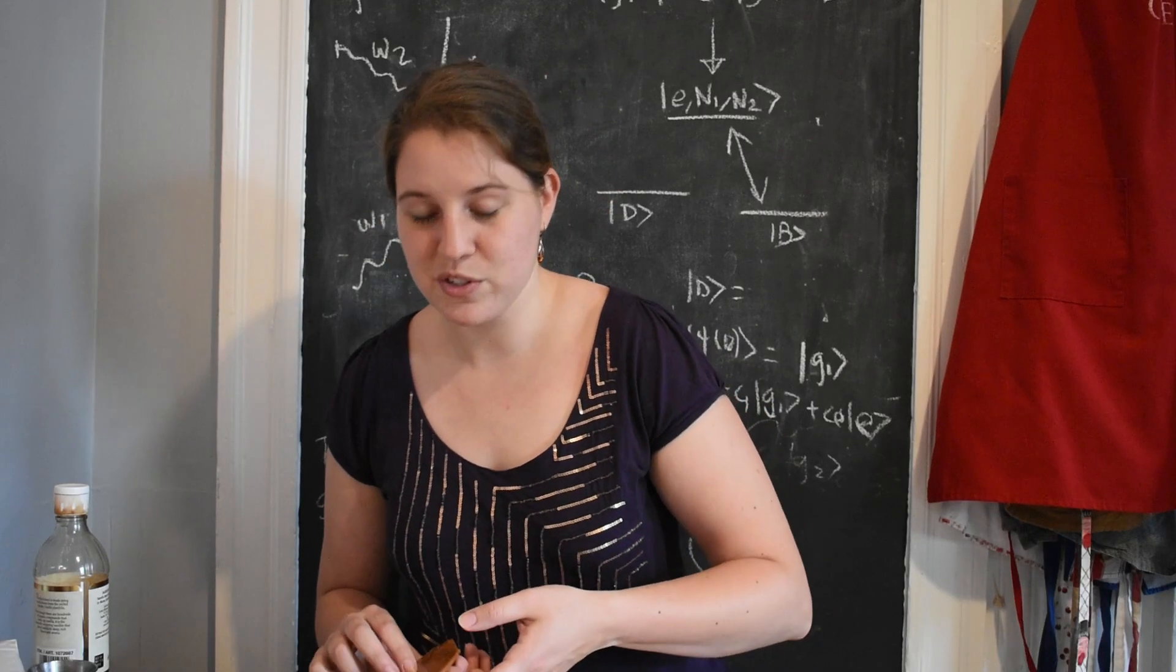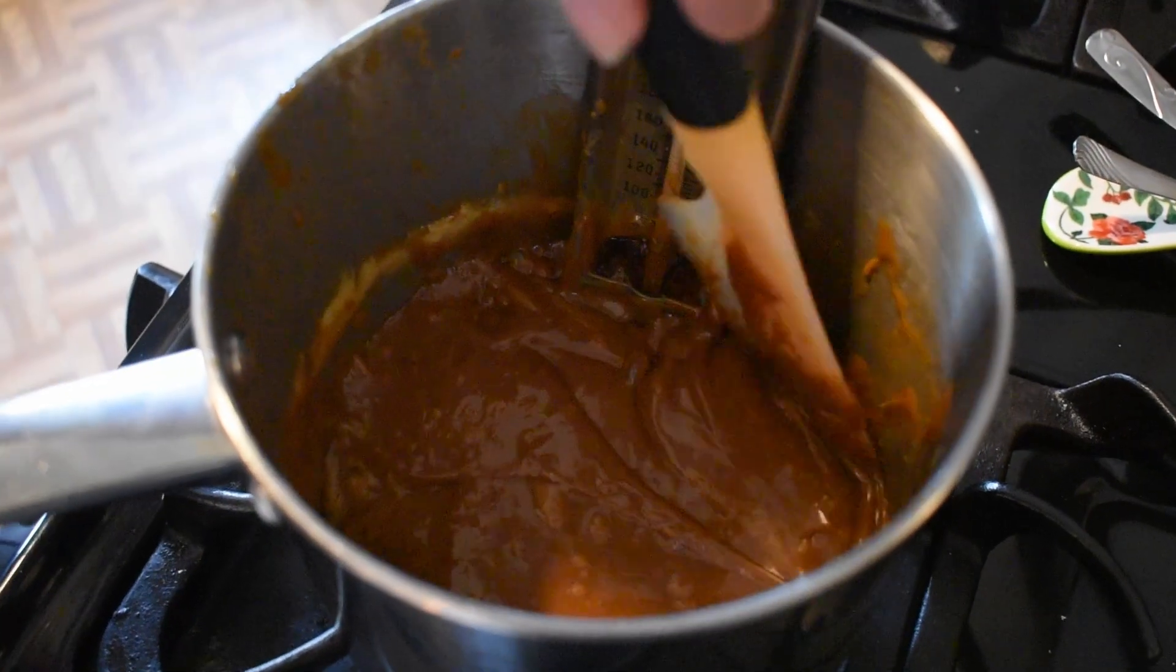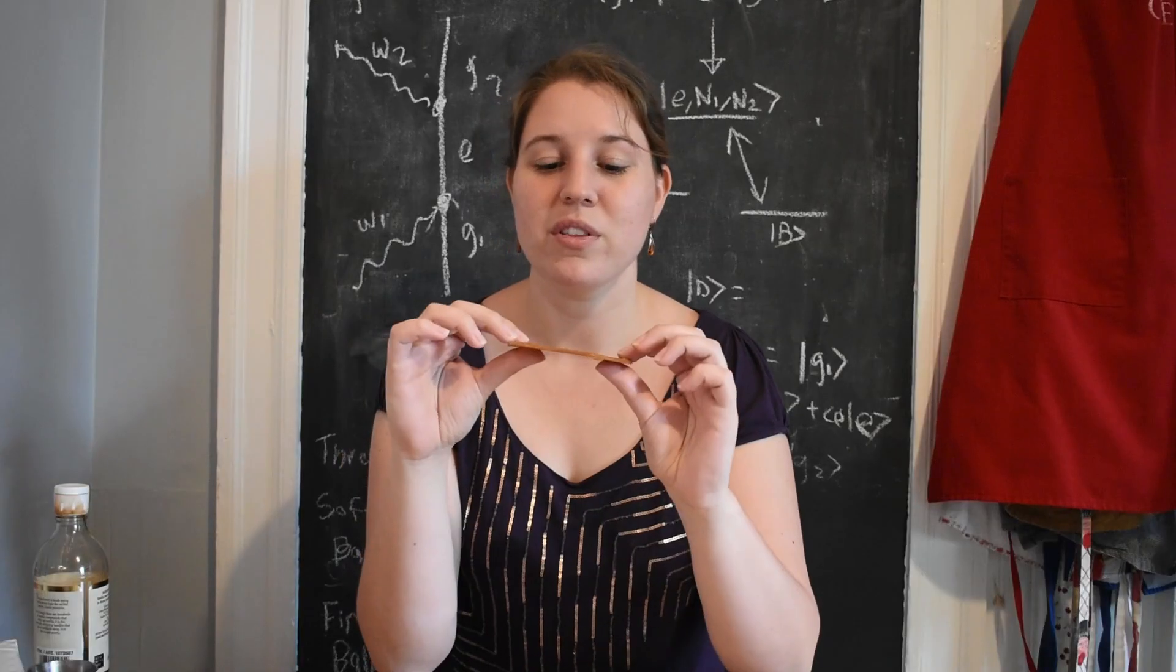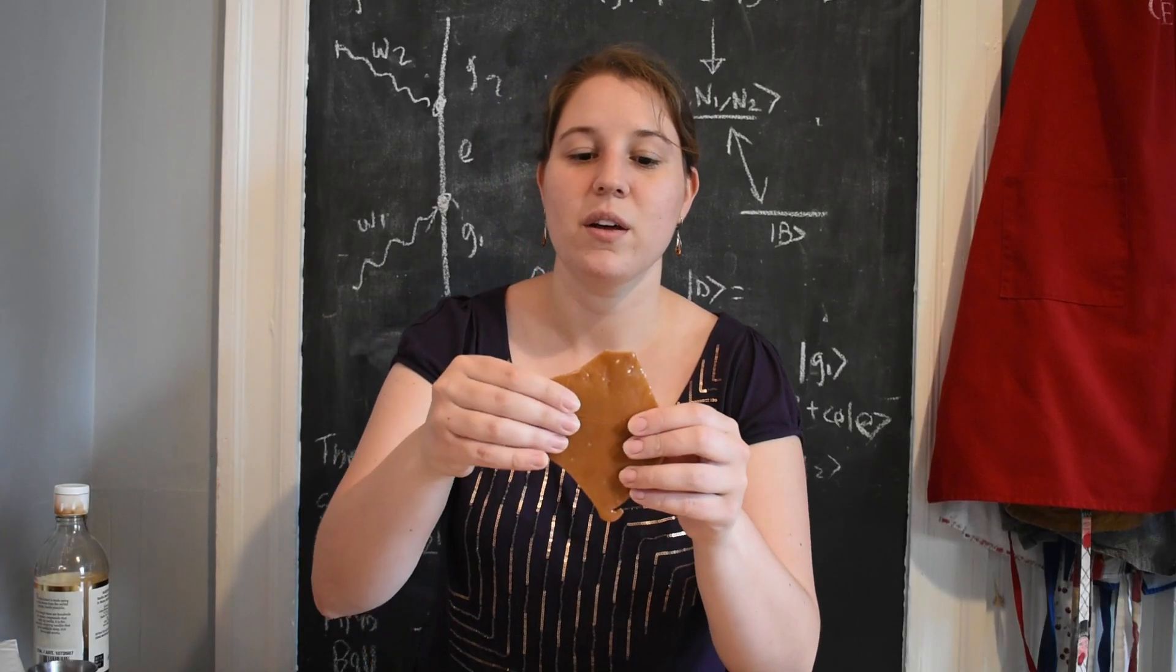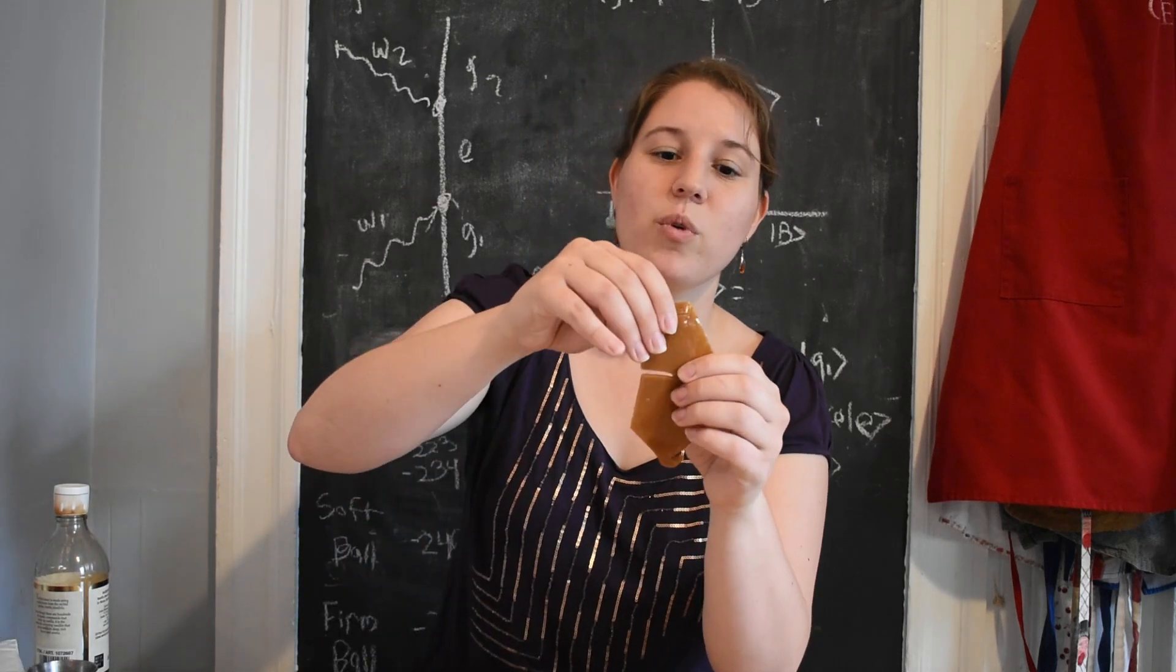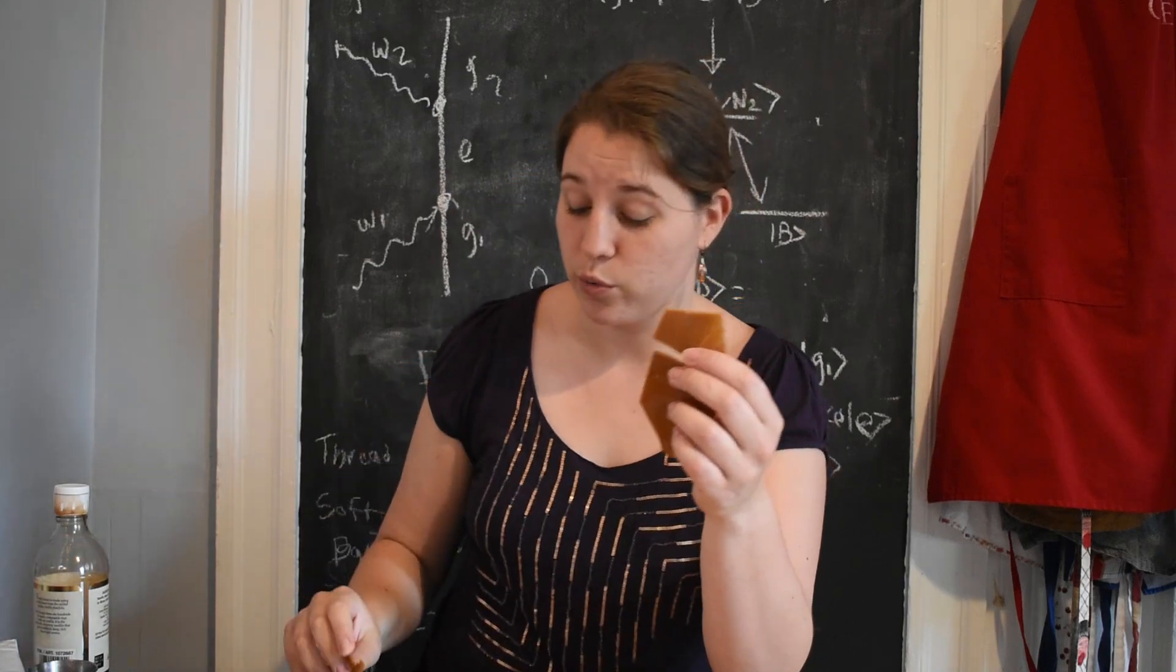So toffee is made when sugar and butter are cooked together and then poured to let cool on some flat surface. Now this is another shiny solid that breaks easily and breaks at pretty much any angle you want. There's not a particular structure in this material that's causing it to want to break a certain way.